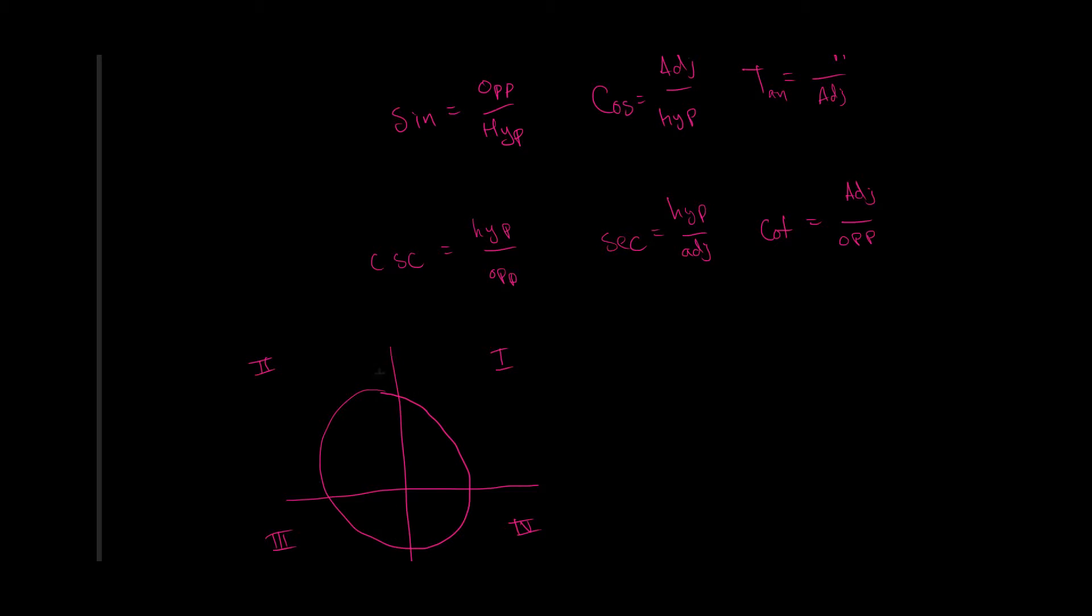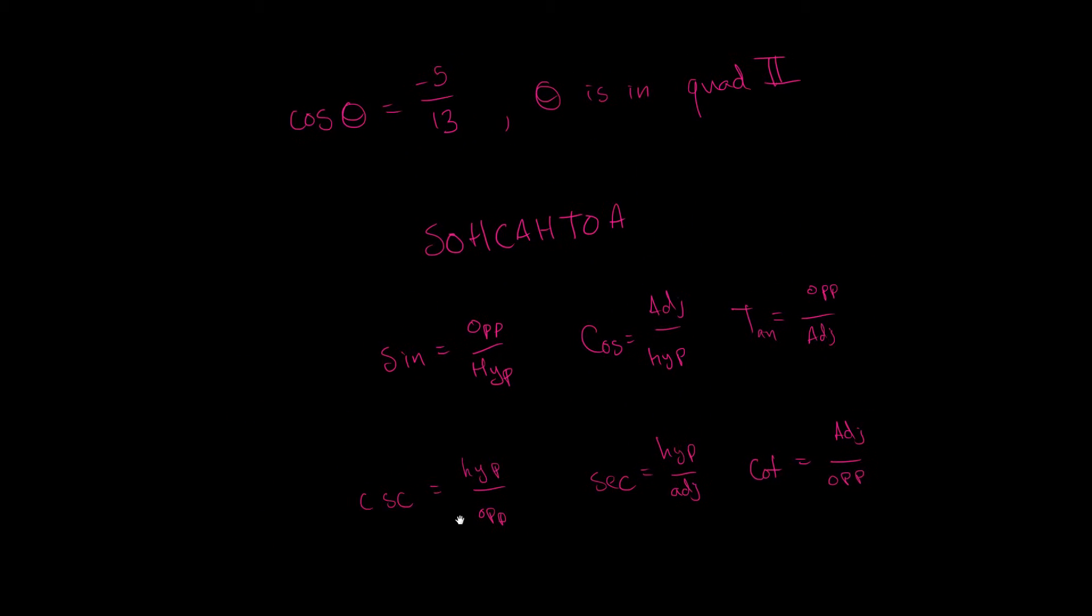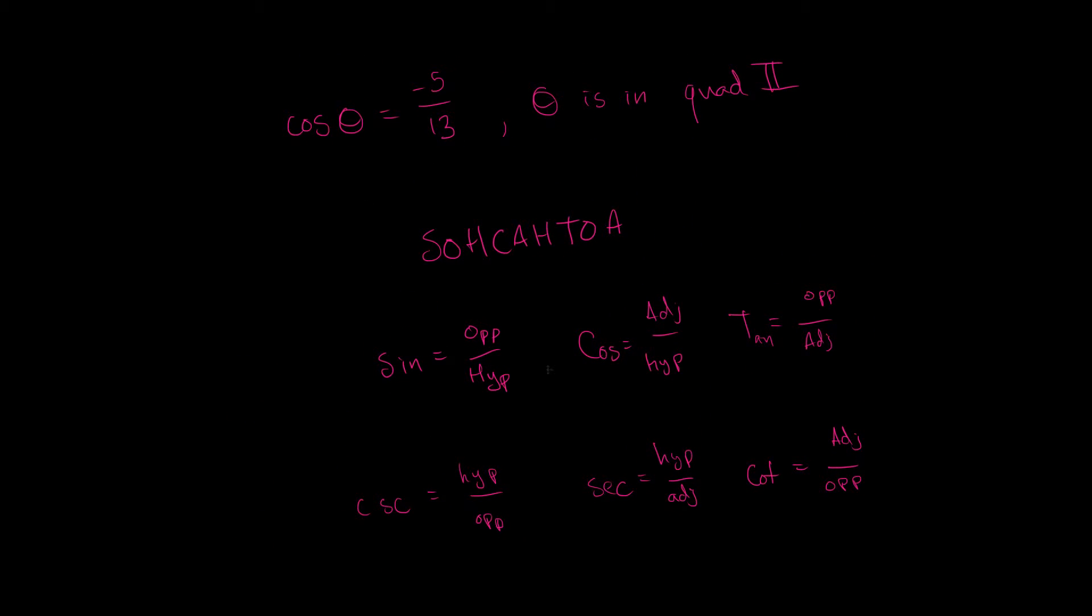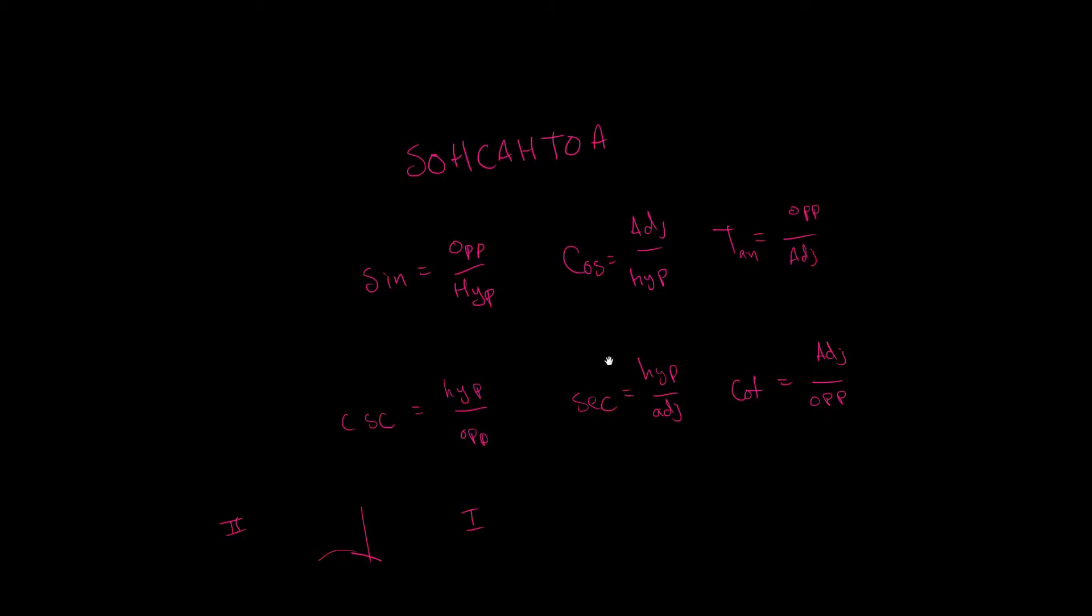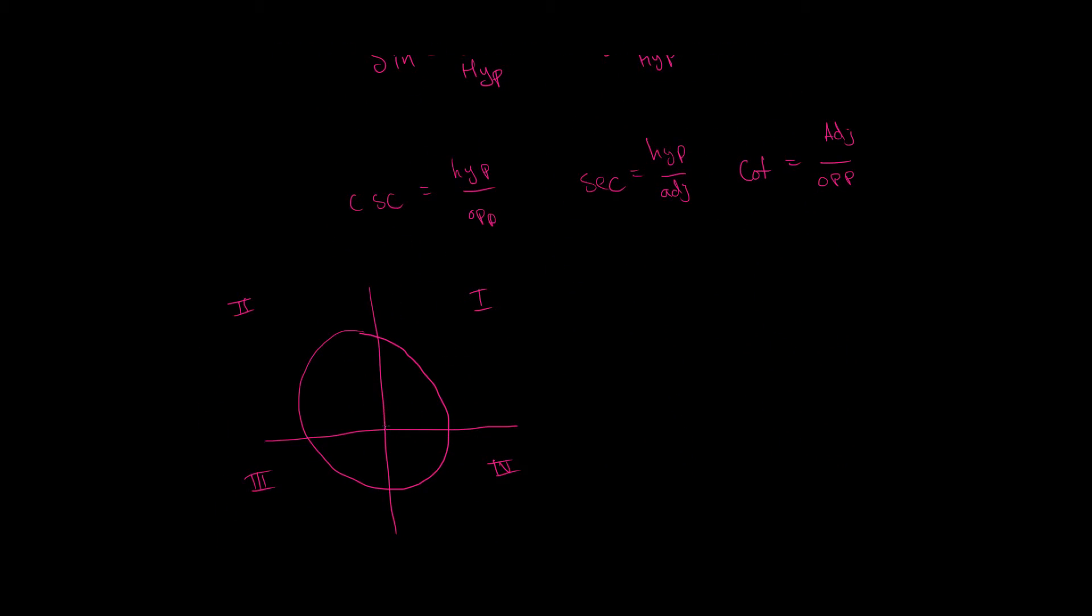So, we know we're somewhere in quadrant 2, and our cosine is negative 5 over 13. So, what is cosine? Cosine is adjacent over hypotenuse. So, our adjacent side is going to be negative 5, and our hypotenuse is going to be 13. It's just that easy.